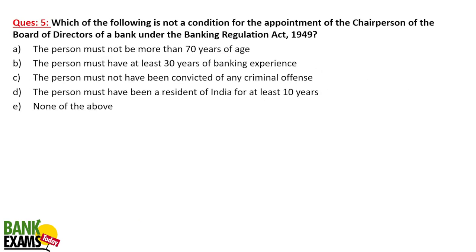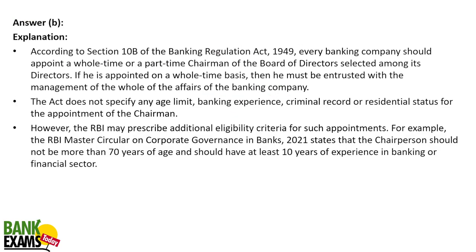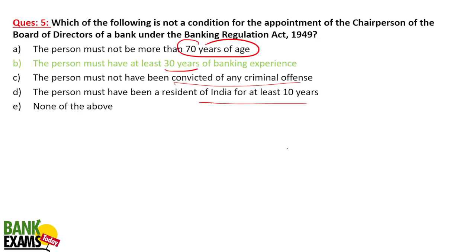Question 5: Which of the following is NOT a condition for appointment of chairperson of the board of directors under the Banking Regulation Act? The options include: he must not be above 70 years of age; the person must have at least 30 years of banking experience; the person must not have been convicted of any criminal offense; and the person must have been a resident of India for at least 10 years. The false statement is that 30 years of banking experience is required — the actual requirement is at least 10 years of banking or financial sector experience.